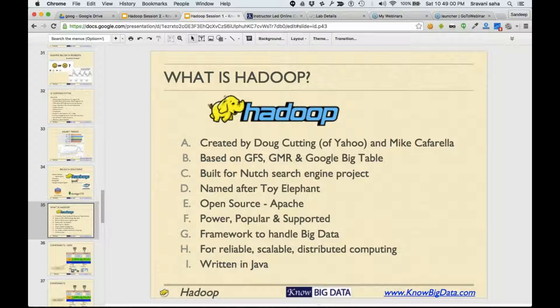Based on these three papers, Doug Cutting and Mike Cafarella built Hadoop. Why did they build it? They were basically trying to build a search engine called Nutch. They were trying to build this search engine and they were stuck at a very basic problem.